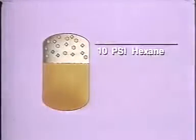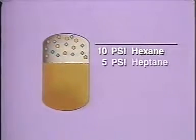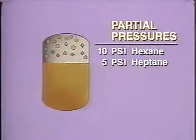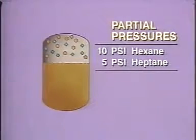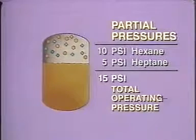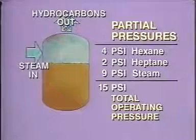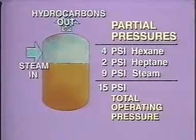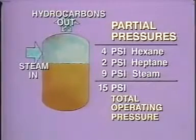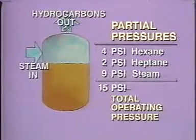Let's take a look at how pressure can be manipulated to improve distillation efficiency. In the gas space inside this container, 10 pounds of pressure is being exerted by hexane molecules, and 5 pounds of pressure is exerted by heptane molecules. These separate pressures are called partial pressures. The total pressure inside a closed vessel is equal to the sum of the partial pressures. So the total operating pressure inside this container is 15 PSI. Now if we add steam to the system and remove some of the hydrocarbon gas molecules, the total pressure inside the container remains at 15 PSI. The steam contributes 9 pounds of pressure, hexane 4 pounds, and heptane 2 pounds of pressure. Adding steam to the system reduces the partial pressure exerted by the hydrocarbon gas molecules.